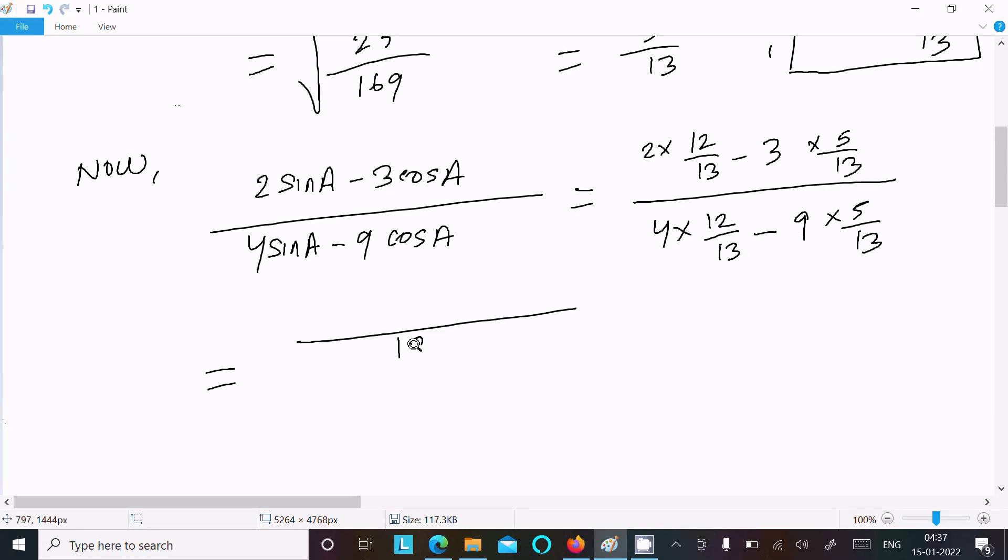The LCM is 13, so this becomes (24 - 15)/13 divided by (48 - 45)/13.